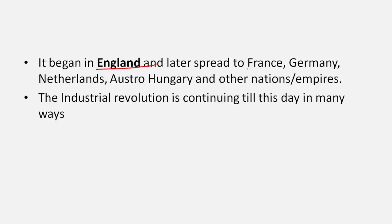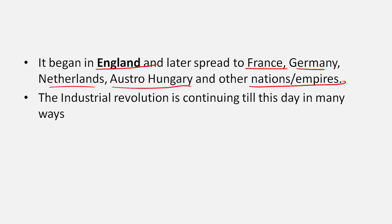The Industrial Revolution took place first in England, and later spread to France, Germany, Netherlands, Austro-Hungary, and other nations including Russia and Japan. Japan was one of the first Asian nations to be industrialized. Today all countries are at some level of industrial development. The developed nations are developed precisely because they had their Industrial Revolution before the developing countries.